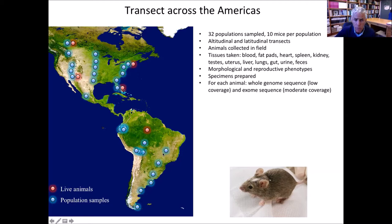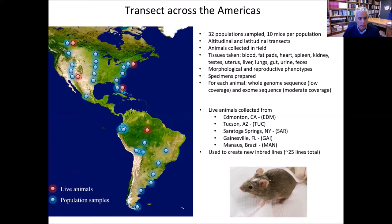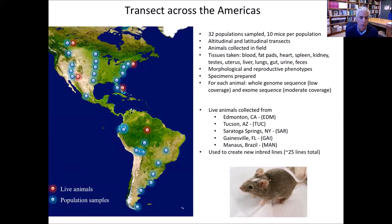For these transects, we've sampled 32 populations with 10 mice per population. We collected the animals in the field, sacrificed them, took tissues, and measured phenotypes. We've done whole genome sequencing at low coverage and exome sequencing at high coverage. What makes this study more interesting is that we also collected live animals and used them to create new inbred lines in the lab — about 25 lines total. This was modeled after some of the work Trudy McKay and others have done in Drosophila establishing new wild lines from natural populations, although our numbers are much smaller.